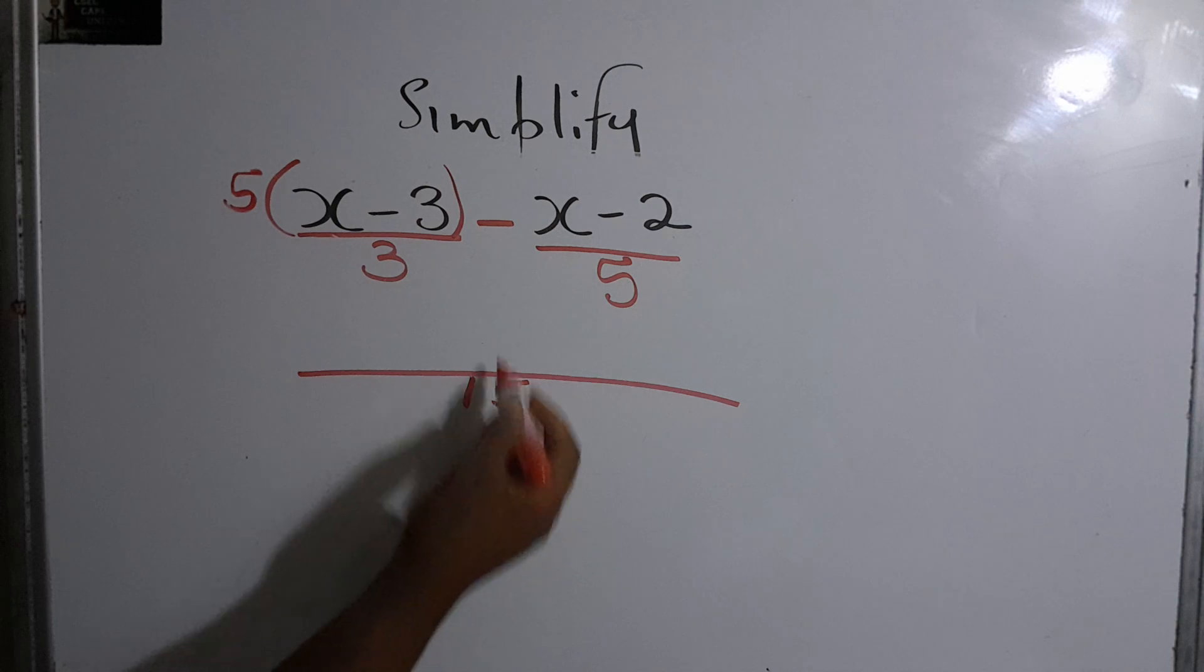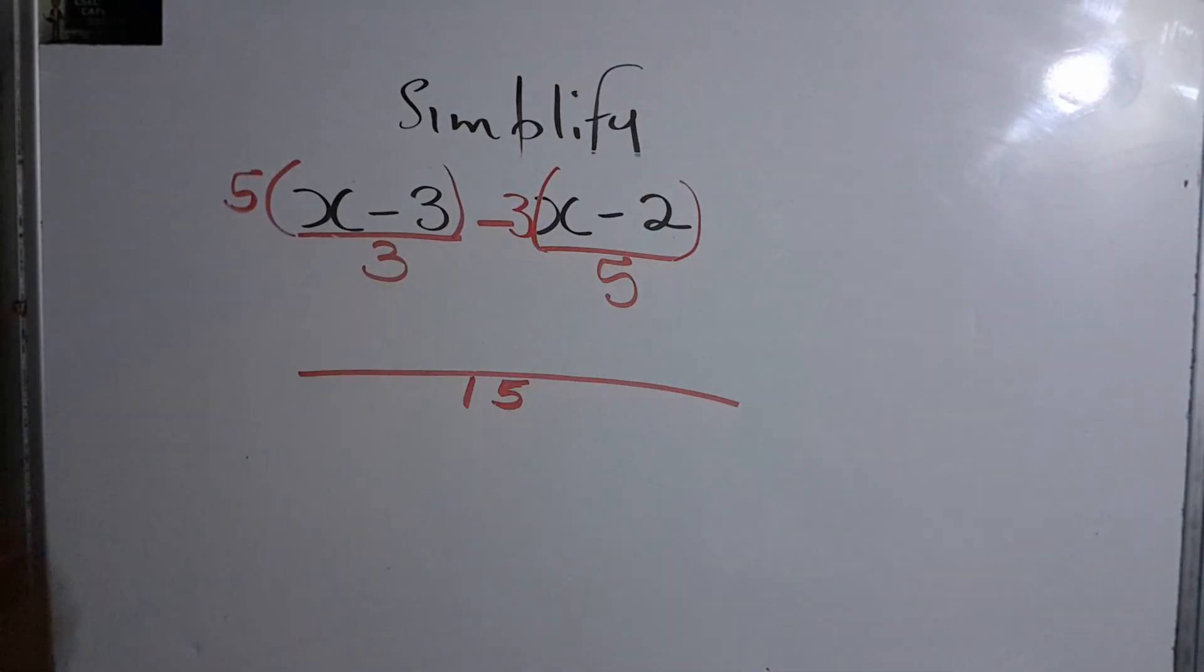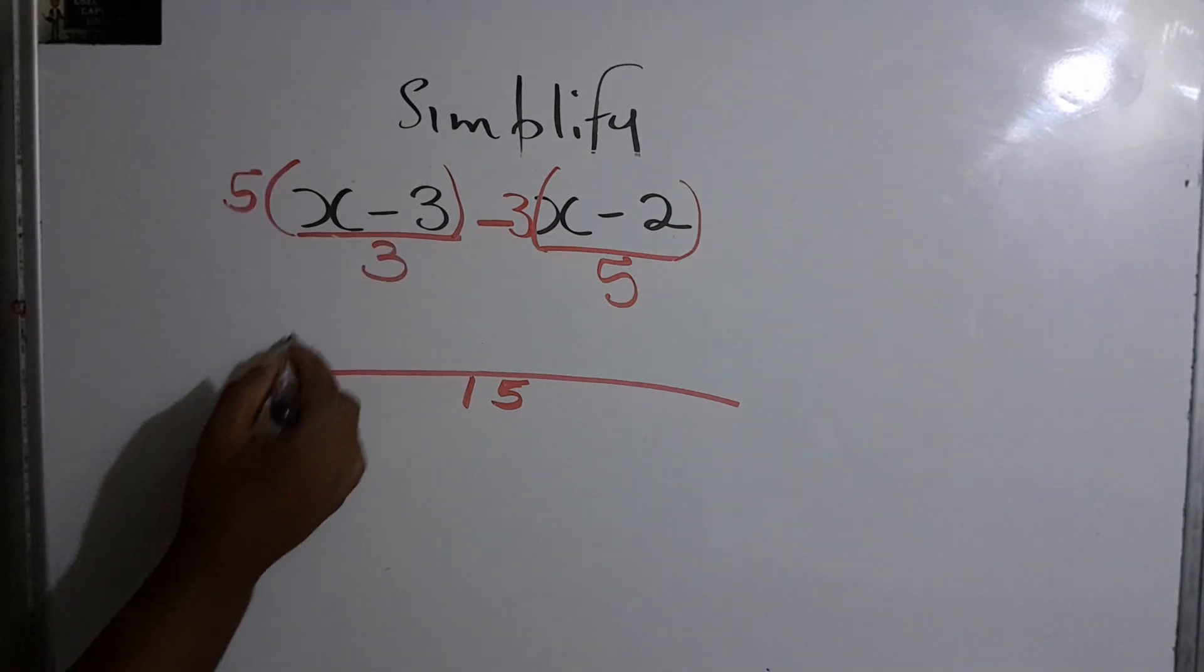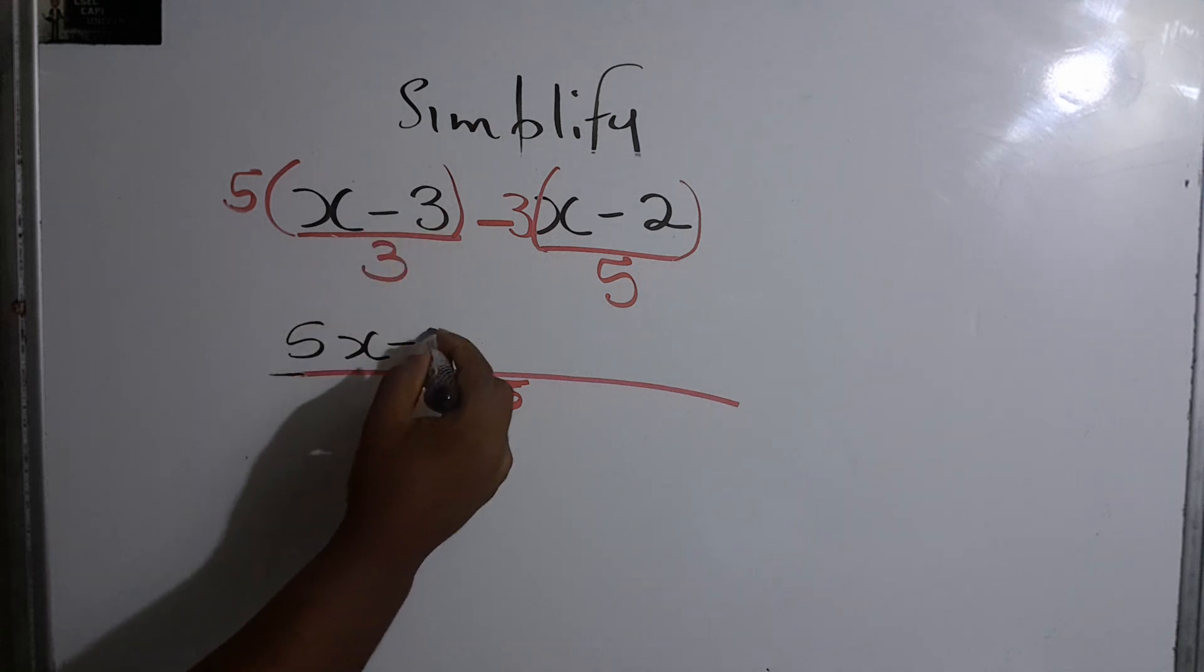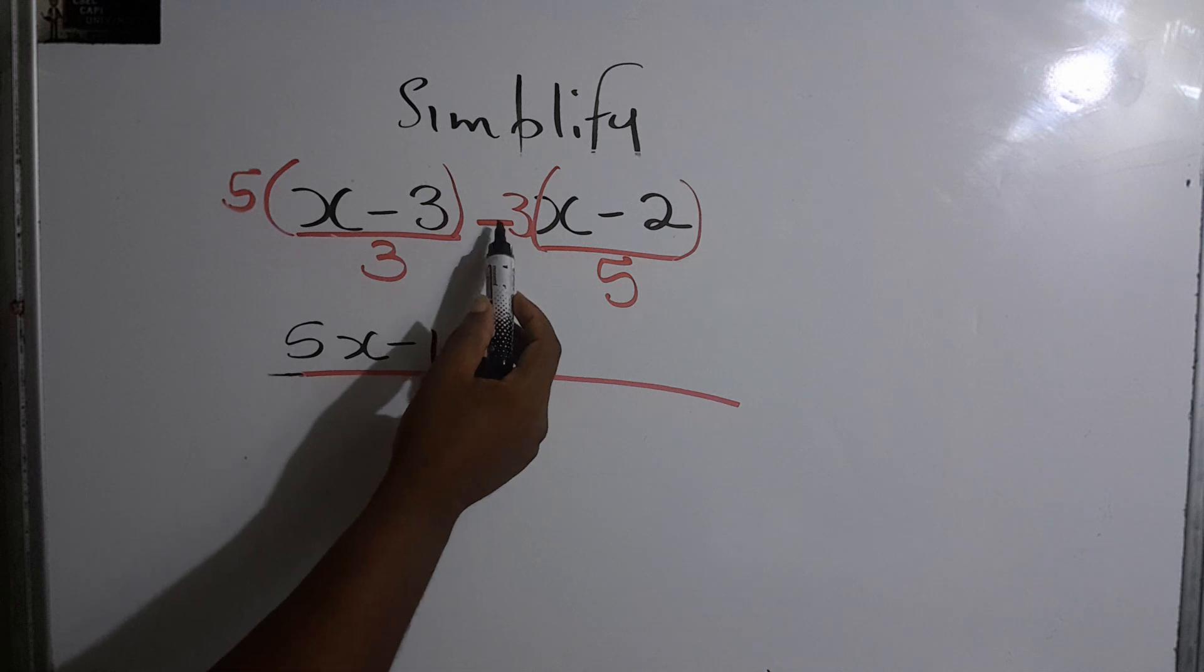And we're gonna say 5 into 15 goes 3 times. Notice this becomes a negative 3. All right, let's go. So we multiply 5 times x, that's 5x. 5 times negative 3, that's negative 15. And then we multiply by negative 3.